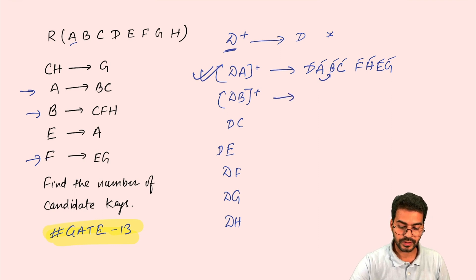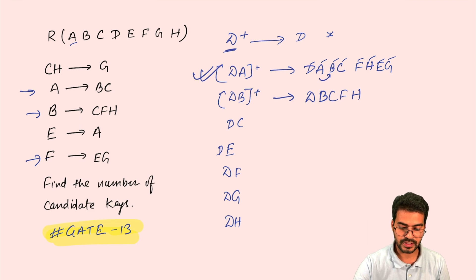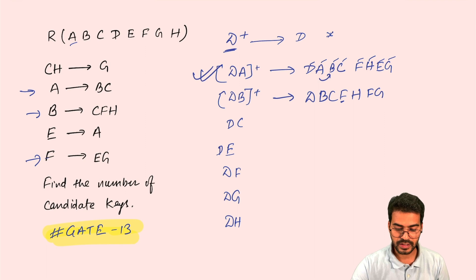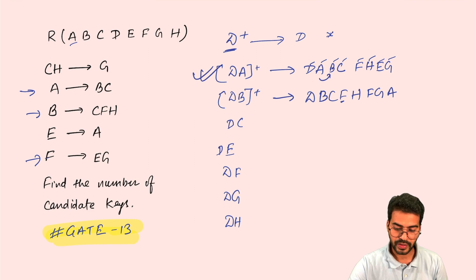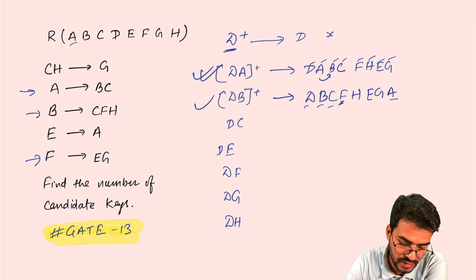Now let's try DB. DB identifies D and B; then B gives C, F, and H; then F gives E and G; then E gives A. Now we have all attributes A, B, C, D, E, F, G, H — so DB is also a candidate key. Next, let's try DC. DC identifies D and C, but there are no functional dependencies with C alone or the CD combination, so DC cannot identify any further attributes — DC is not a candidate key.